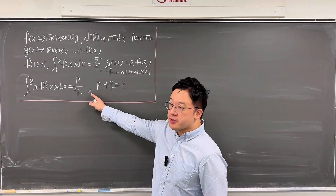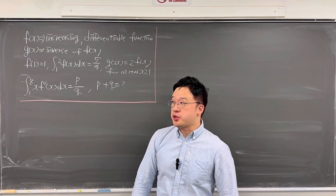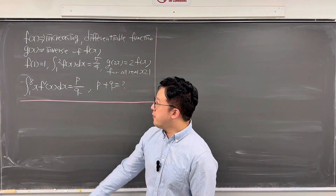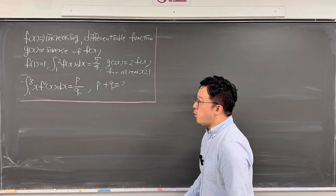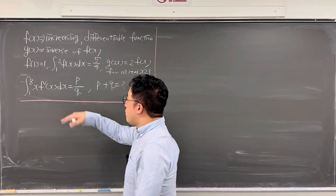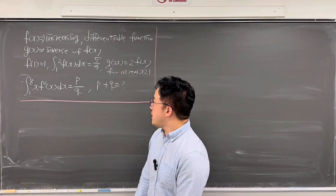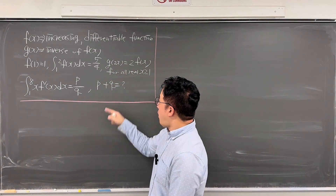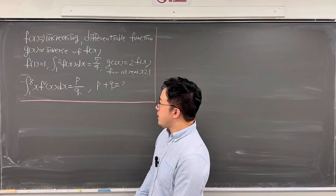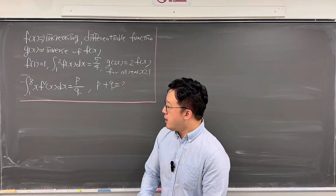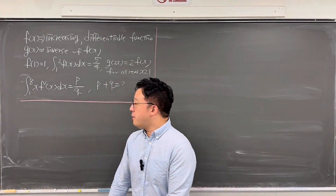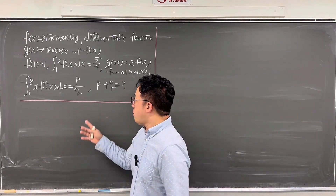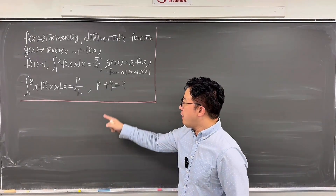Okay, here's the question. This is only the summary of all the conditions. f(x) is an increasing differentiable function, and g(x) is an inverse function of f(x). f(1) = 1, the integral from 1 to 2 of f(x)dx is 5/4, and g(2x) = 2·f(x) for all real x ≥ 1. The question asks: the integral from 1 to 8 of x·f'(x)dx equals p/q. Given p and q are relatively prime, what is p + q?